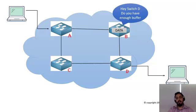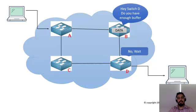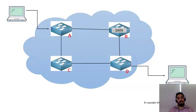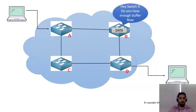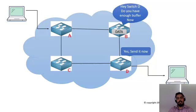Switch B requests Device D: do you have enough buffer to receive the data? Device D is running out of resources and denies, stating it cannot receive the data at this time. Device B then waits and sends another request to Device C to check availability. Once Device C confirms it has enough buffer space, the data is forwarded to Device T, which checks it against CRC and finally transfers it to the destination.